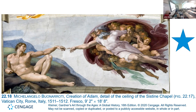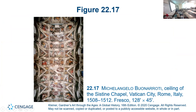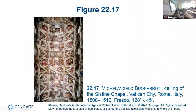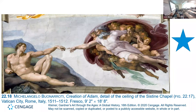The Creation of Adam is one of the panels here of the Sistine Chapel ceiling. What's on this ceiling is the Book of Genesis, painted all over the ceiling. This is the Creation of Adam, detailed on the Sistine Chapel.